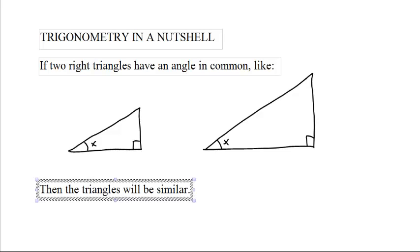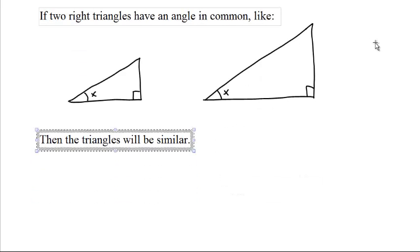These triangles would be similar because we know two of the angles. Therefore the third angle has to be, let's see, 180 minus 90 is 90, 90 minus x. Anyway, so they have the same three angles, so they're similar.